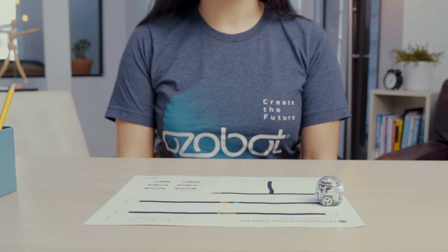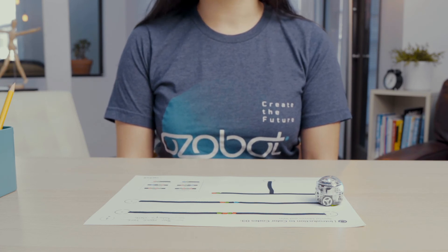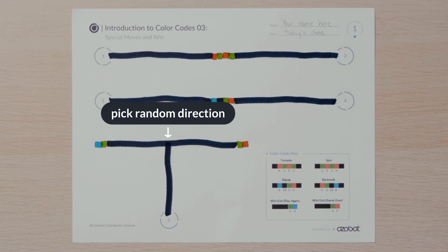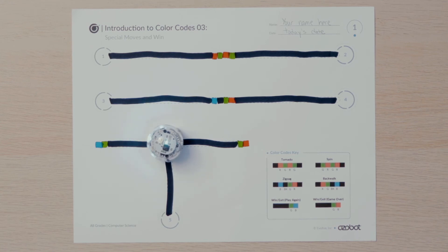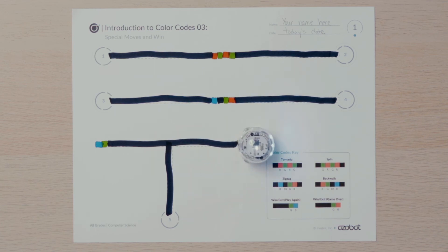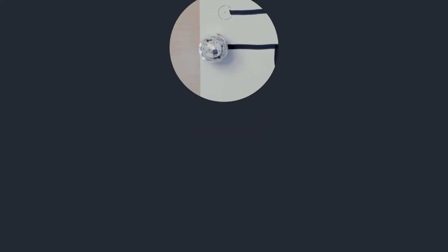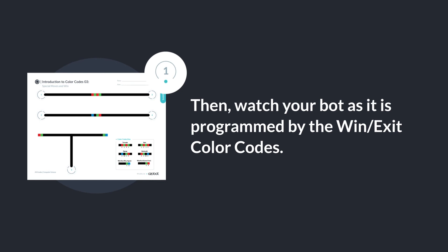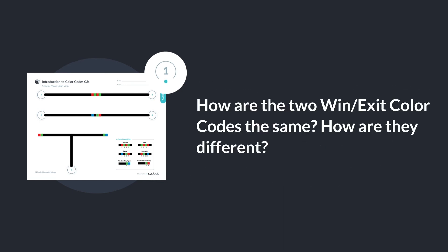Now that you've seen some of the sweet moves your bot can do, let's look at what your bot can do when it completes a task or gets to the end of a line. Put your bot on start number five and observe how it uses its line sensor to follow the pathway and then randomly choose a direction to turn at the intersection. After your bot decides which direction to turn, it will follow the color code instructions at the end of the line. You will run your bot multiple times from start five until it has made its way to both win-exit color codes. How are the two win-exit color codes the same? How are they different?